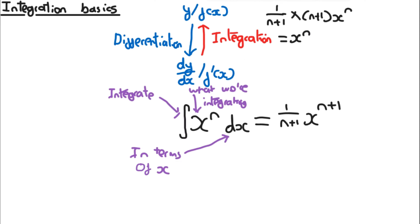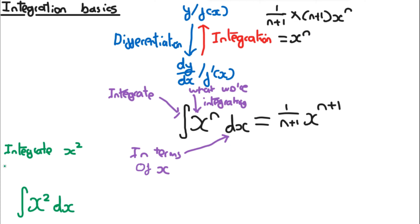Let's do an example. Say we want to integrate x squared. We write the integral symbol at the start and dx on the end. This says: integrate x squared in terms of x. In this case n = 2, so we get 1/(2+1) = 1/3, and x to the power of 2+1 = 3. So x squared integrated is (1/3)x³.